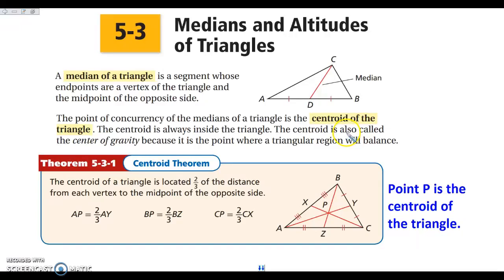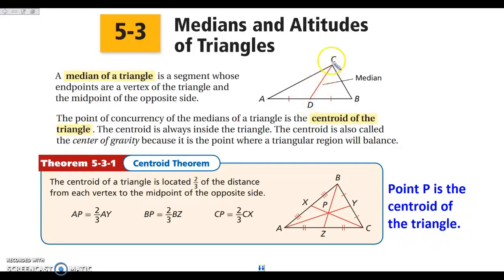Hey everybody, today we are looking at chapter 5, section 3, which is medians and altitudes of triangles. First thing we need to know is what a median is. A median is a segment whose endpoints are a vertex of the triangle, which is right here at point C, and the midpoint of the opposite side, which is over here at point D. So it's vertex to midpoint for our medians.